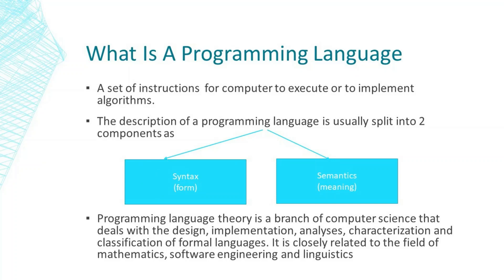What is a programming language? It is a set of instructions for a computer to execute or to implement algorithms. The description of a programming language is usually split into two components: one is the form or syntax, and the other is meaning or semantics. Programming language theory is a branch of computer science that deals with the design, implementation, analysis, characterization, and classification of formal languages.